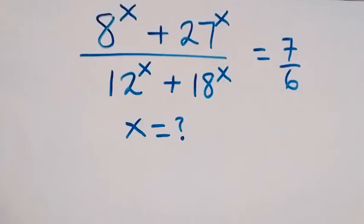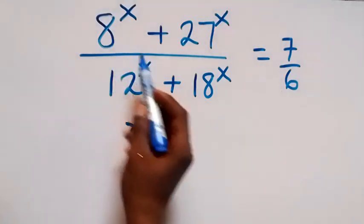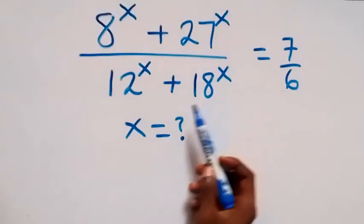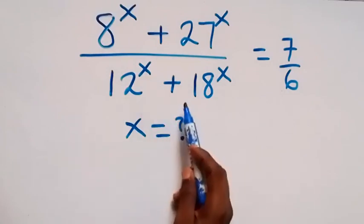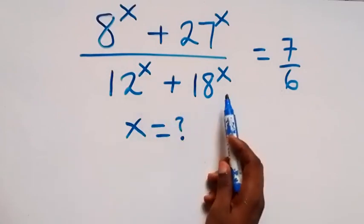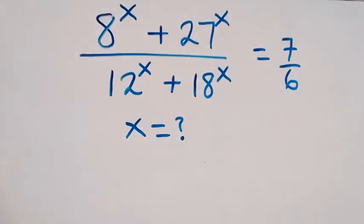Hello, you are welcome here. How to solve this nice algebra problem. We have 8 raised to the power x plus 27 raised to the power x, divided by 12 raised to the power x plus 18 raised to the power x, equals 7 over 6. The value of x is expected to be a real number.